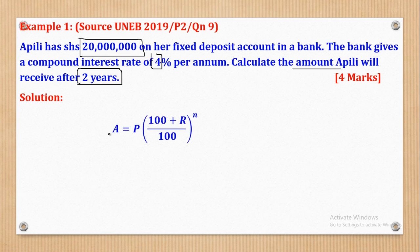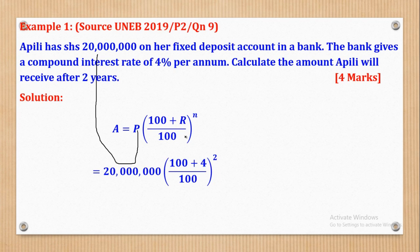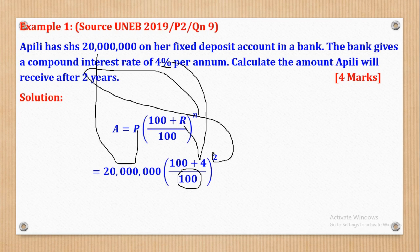We know that first of all, we have to put the formula: A equals P multiplied by (100 plus R over 100), everything raised to power N. After that, we substitute. A is what we want. P is 20 million, R is 4, and this percentage is already accounted for by the denominator. N, the number of years, is 2, so that's what we put there.